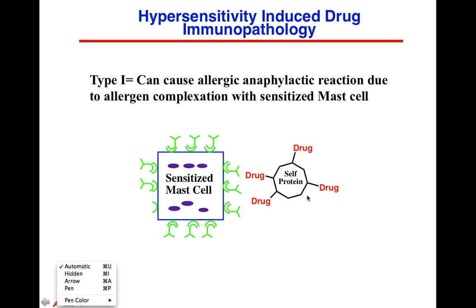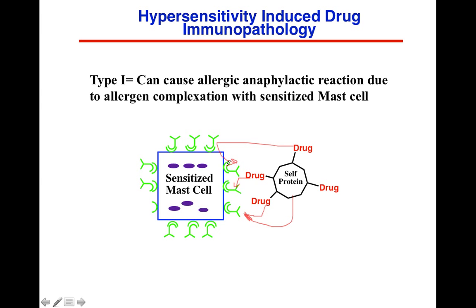If that drug binds, it activates those mast cells and results in an anaphylactic response. This is a drug-to-self-protein interaction — you can think of this as a hapten scenario where the drug binds to the antibody. In this case you're activating mast cells through an IgE process in which IgE binds to the drug.